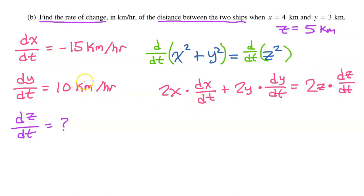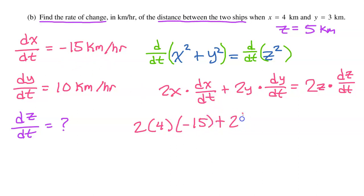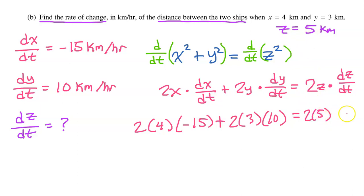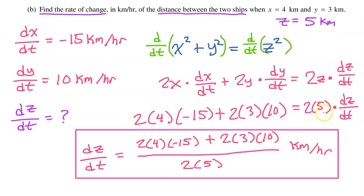Let's make some substitutions. We have 2 times X — at the moment in question, X is 4, and dX/dt is negative 15 kilometers per hour. Plus 2Y — Y is 3 at the moment in question — times dY/dt, which is positive 10 at the moment in question. And Z is 5 at the moment in question. So the only unknown is dZ/dt. Dividing both sides by 2 times 5, we get a result that is an acceptable answer for the AP exam.